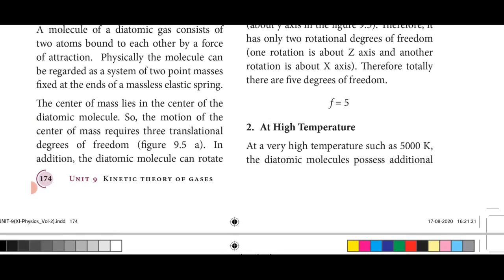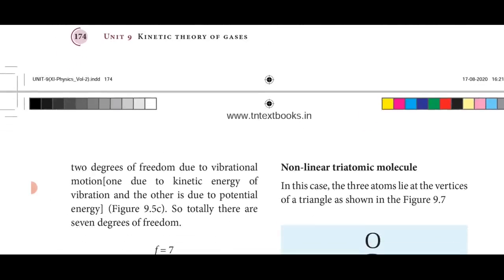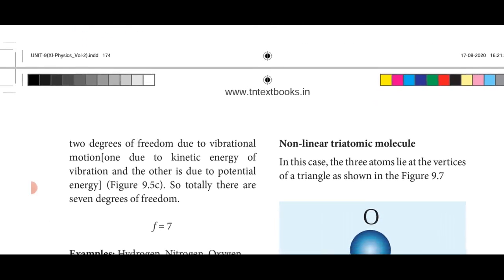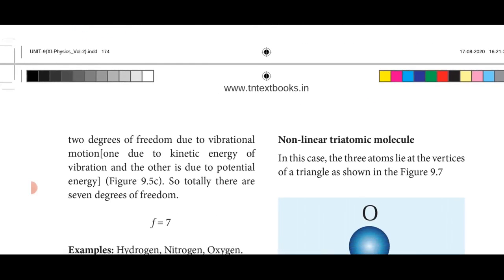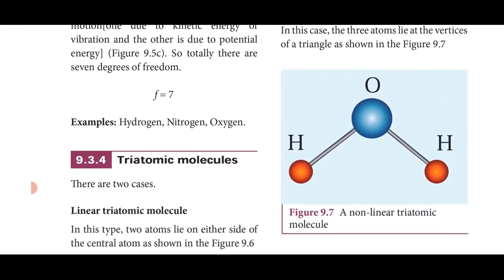At higher temperature — around 5000 Kelvin — a diatomic molecule possesses an additional two degrees of freedom due to vibrational motion. So at higher temperature the diatomic molecule has seven degrees of freedom.